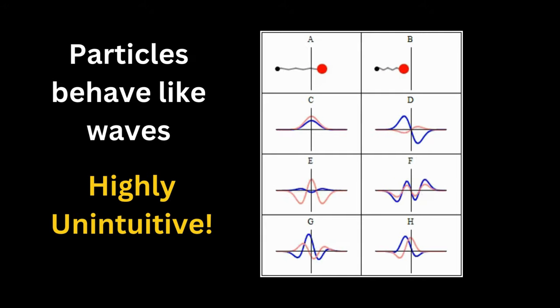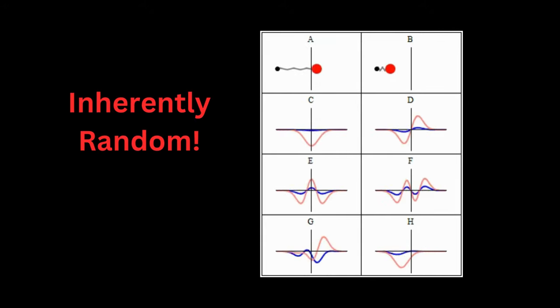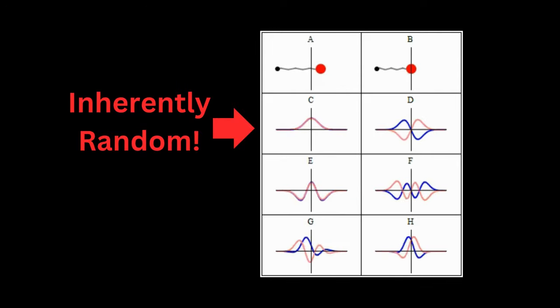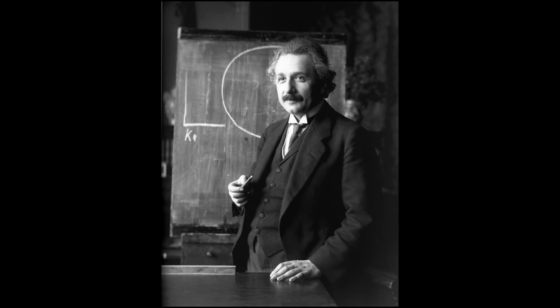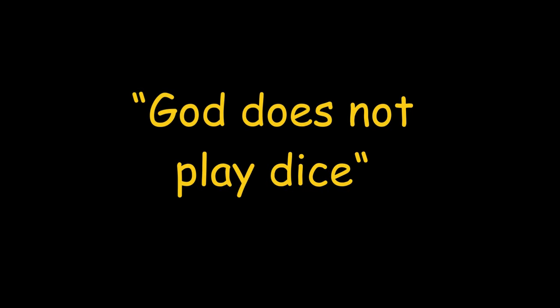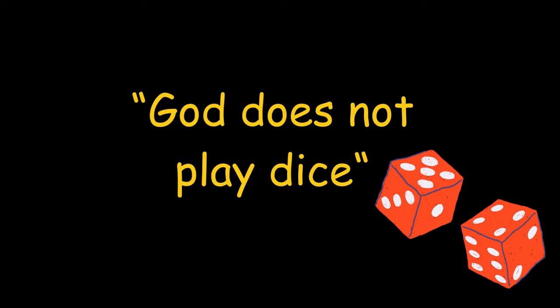Suffice to say that quantum mechanics pointed to the idea that there is inherent randomness at the microscopic scale, which simply can't be predicted, despite many efforts to come up with schemes to explain away this unpredictability. Most famously, this even offended Einstein, who came up with the expression out of exasperation that God does not play dice.